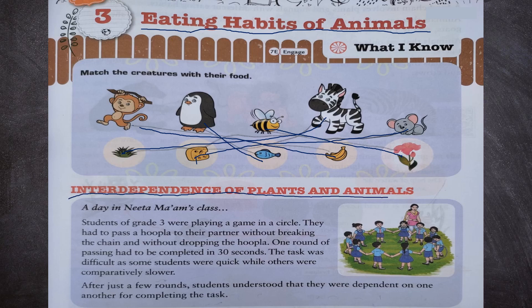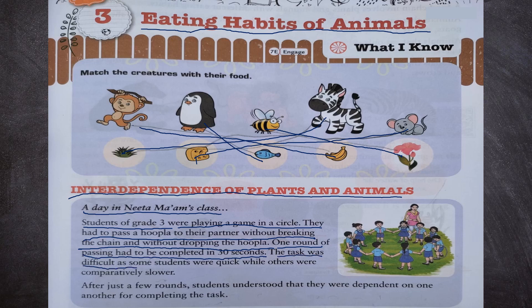Now let us see the interdependence of plants and animals. A day in Neetamem's class: students of grade 3 were playing a game in a circle. They had to pass a hoopla to their partner without breaking the chain and without dropping the hoopla. One round of passing had to be completed in 30 seconds. The task was difficult as some students were quick while others were comparatively slower. After just a few rounds, students understood that they were dependent on one another for completing the task.